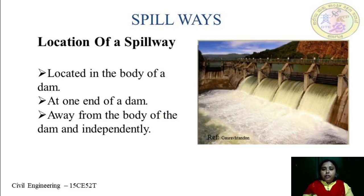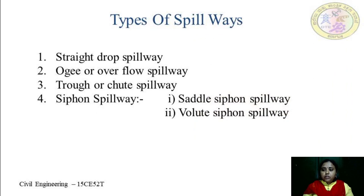Regarding the location of a spillway, spillways are generally located in the body of the dam, constructed at one end of the dam. They can also be constructed away from the body of the dam. A spillway generally consists of a control structure, one conveyance channel, and a terminal structure.